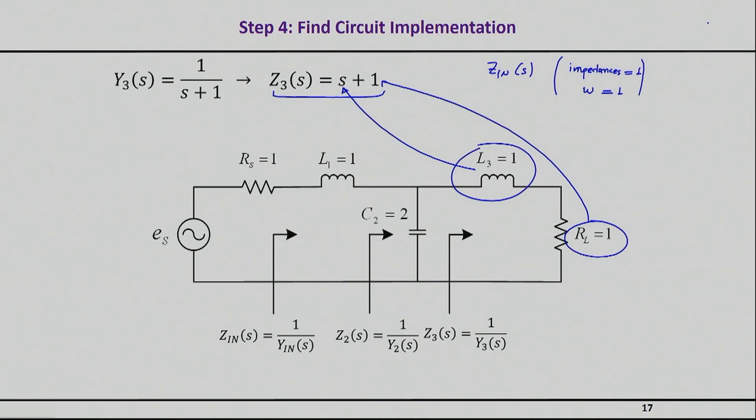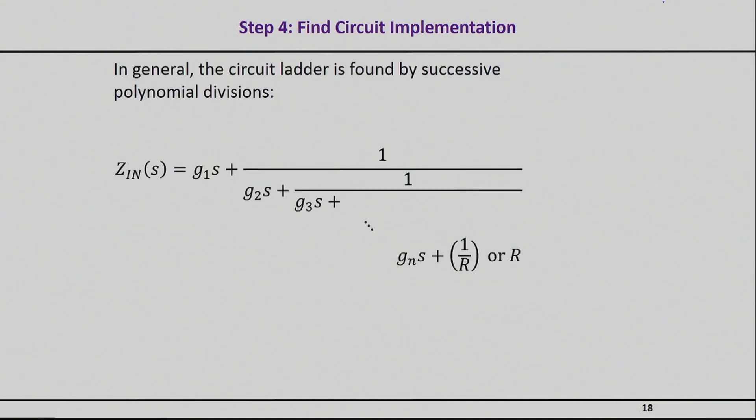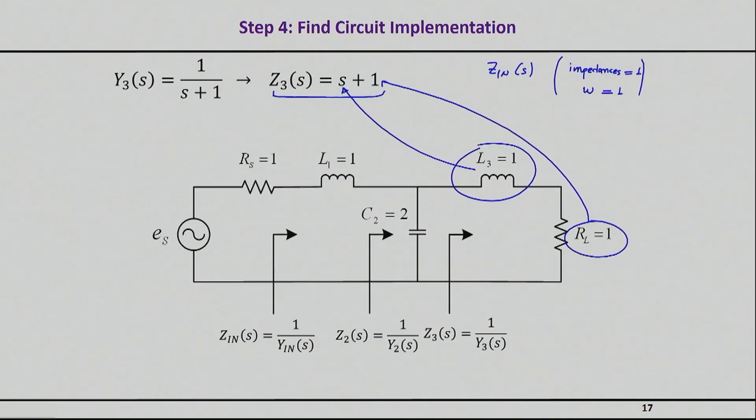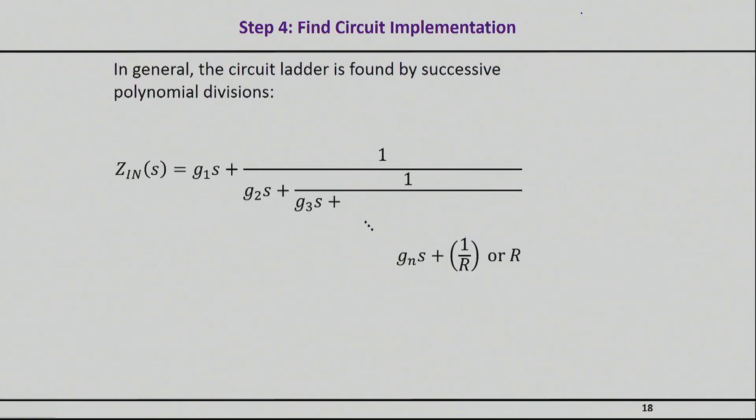So in principle, you can basically do this for whatever Z input you have. Now, the interesting thing about this process is that if you basically follow this, you will end up with a ladder network, very similar to what you will see right here, where you just have successive polynomial divisions, and you will always end up with the element values being right here.